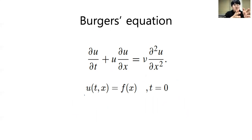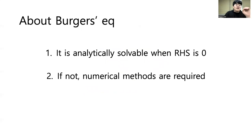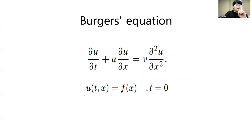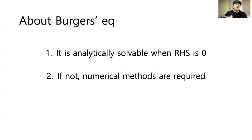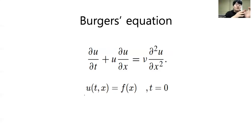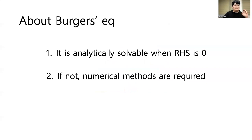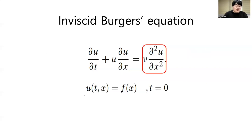Burgers' equation is one of the key equations used in the fluid field. It is analytically solvable when the right-hand side is zero — meaning when there is no viscous term. Otherwise, numerical methods are required. Even when it is analytically solvable, there are cases where it cannot be solved analytically due to boundary condition effects. So it's hard to solve Burgers' equation in general. Today I'm going to talk about the inviscid Burgers' equation.